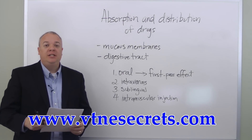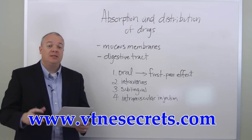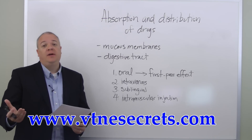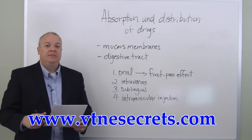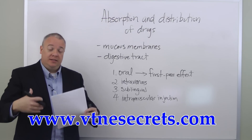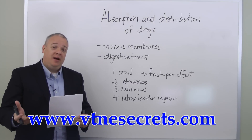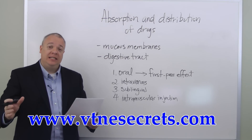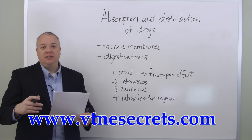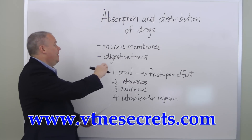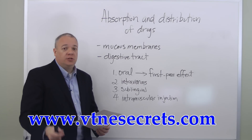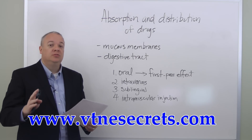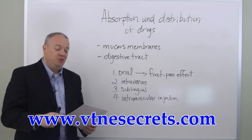We're going to talk about the absorption and distribution of drugs and medication and some of the factors related to that. When we think about these factors, one of the main things to remember is solubility. The body wants to equilibrate the intake of the drug, but depending on the type of drug, the way it's absorbed, and other factors, this influences how evenly and how rapidly the drug is distributed. The two primary ways drugs are absorbed are through mucous membranes and the digestive tract.